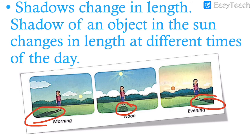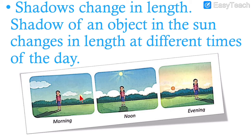In the morning, the sun is rising in the east; then it ascends and comes directly above; then it goes down and sets in the west. According to the position of the sun, the lengths of the shadows keep changing. Morning, noon, and evening the shadows are of different lengths.